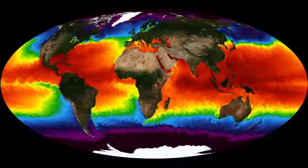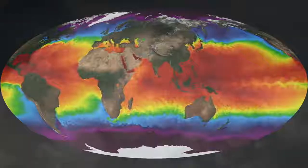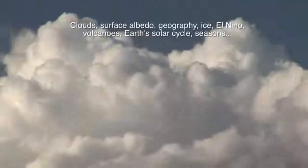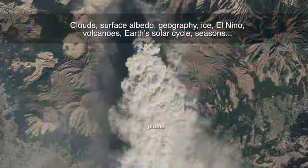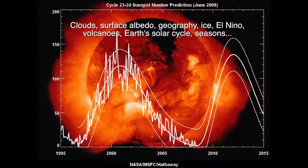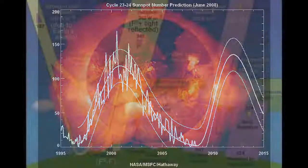Daily, seasonal, yearly, and decadal variations in cloud coverage, ice, El Nino, volcanic eruptions, the sun-solar cycle, and more can alter energy absorption and reflection.